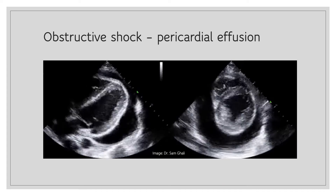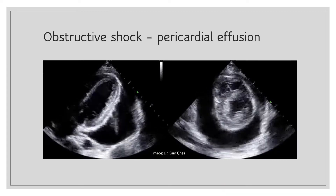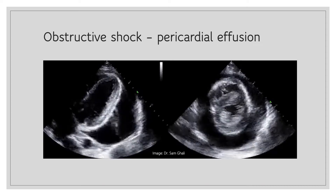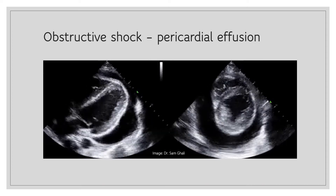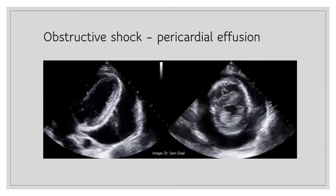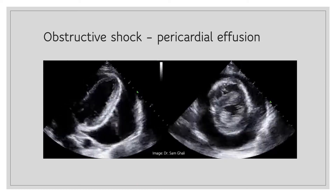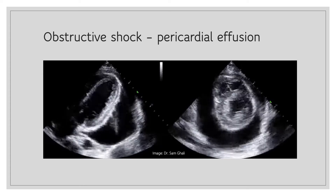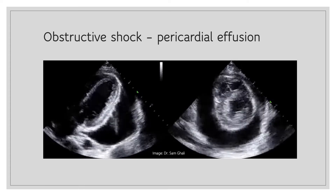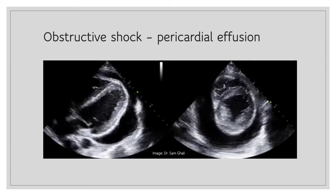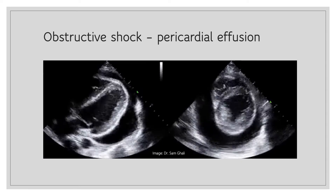Here is another example of obstructive shock — pericardial effusion. Note the anechoic band of fluid around the heart in this tilted apical 4-chamber and parasternal short axis views. This fluid will compromise cardiac function and decrease cardiac output, resulting in hemodynamic collapse. This patient with hypotension also doesn't benefit from fluids but would benefit from timely pericardiocentesis.